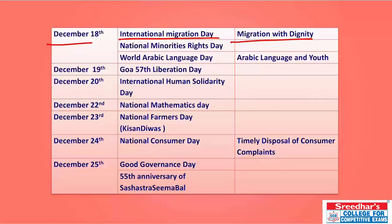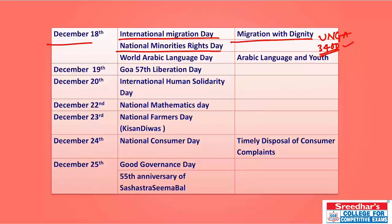December 18th is observed as International Migration Day — the 2018 theme is 'Migration with Dignity,' observed by the UN General Assembly. The theme was chosen because in 2018, nearly 3,400 migrants and refugees died worldwide while migrating. National Minority Rights Day is also observed on December 18th, celebrated for promoting the actual and legal rights of minorities and their employment opportunities and upliftment.